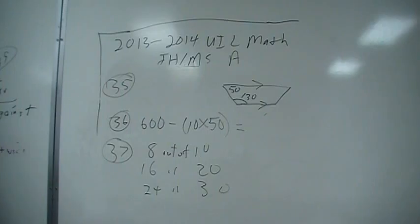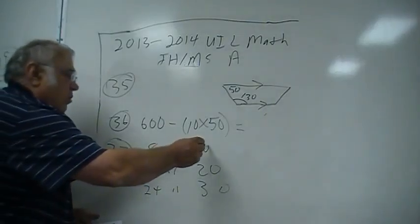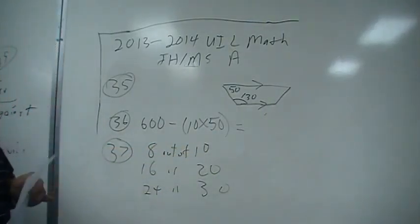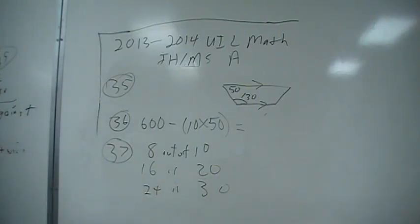Problem 37: They won 8 out of their first 10 games. If they played 30 games, what would you expect them to win? They'll win 8 out of every 10, so 16 and 24. Out of 30, they'll win 24 games.